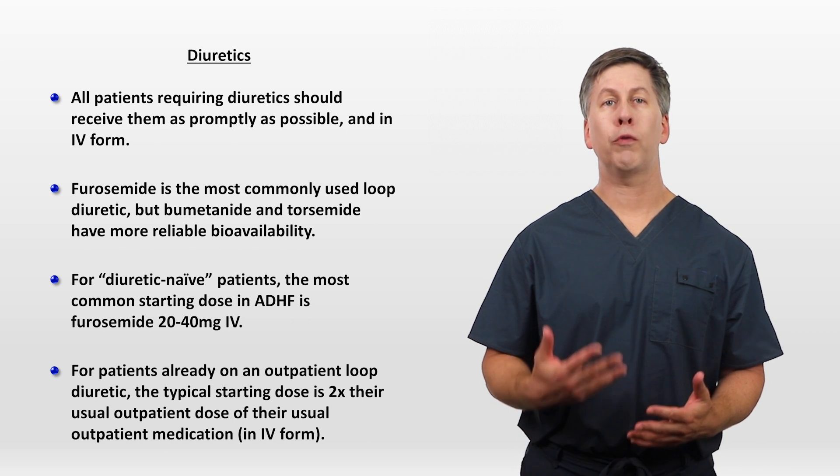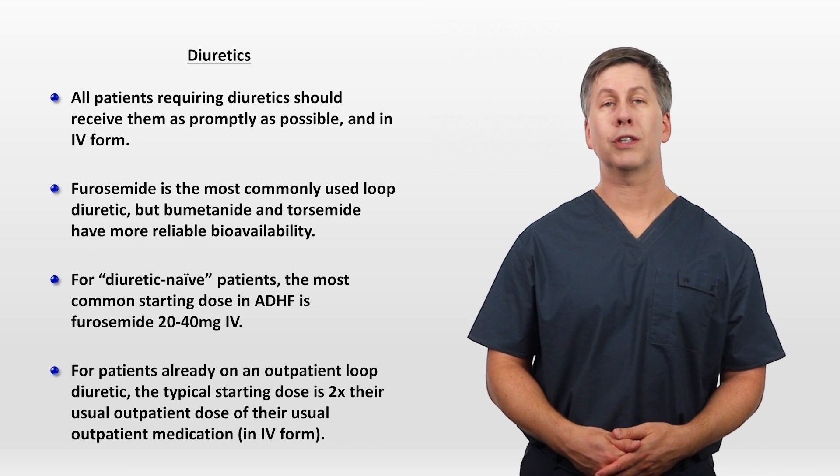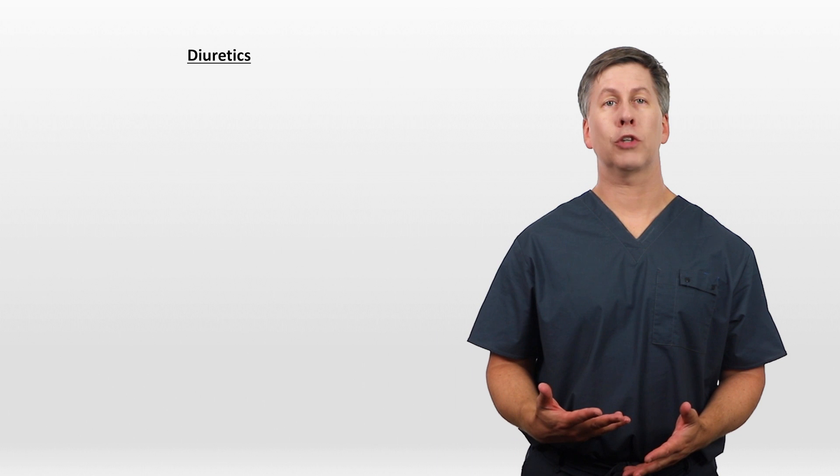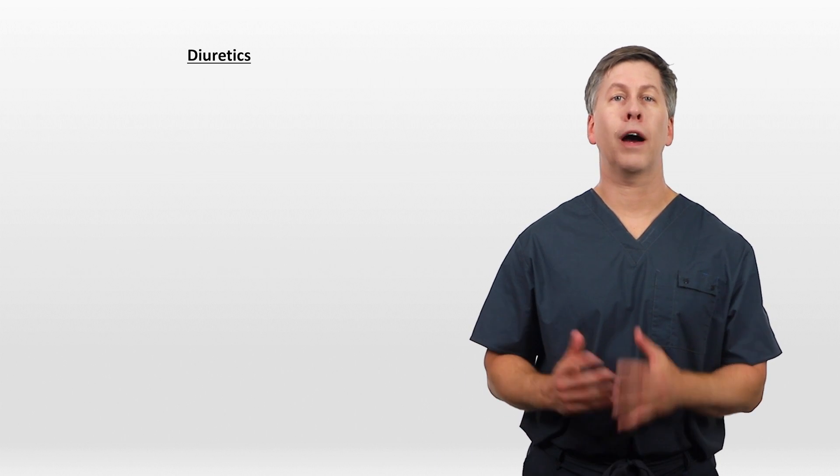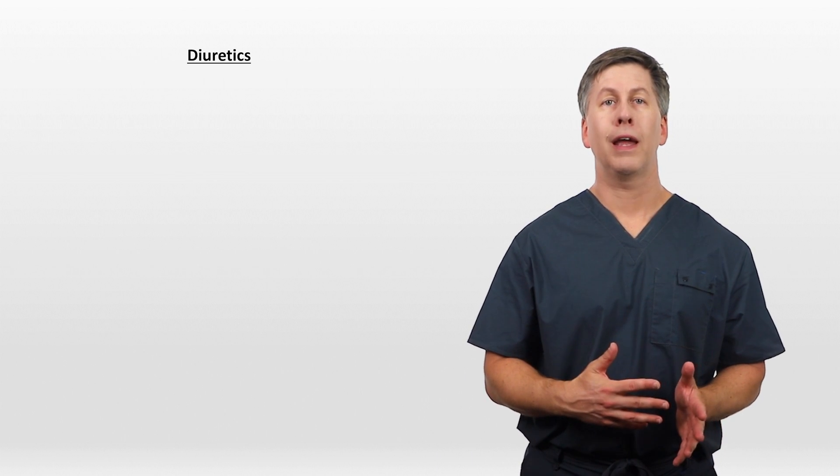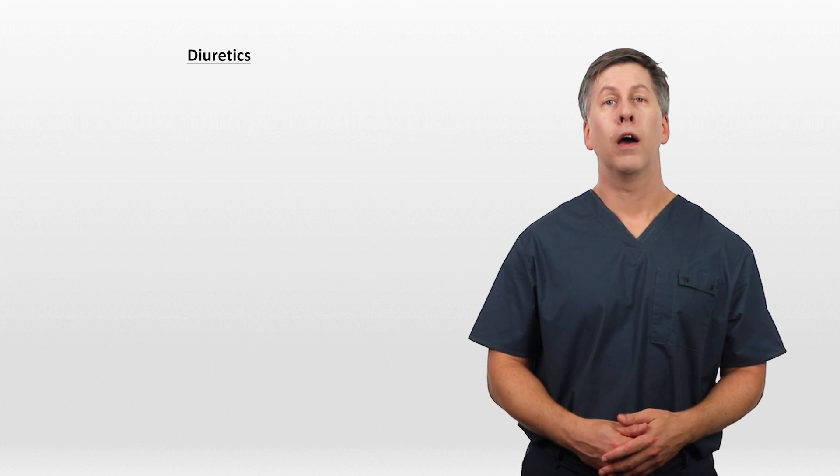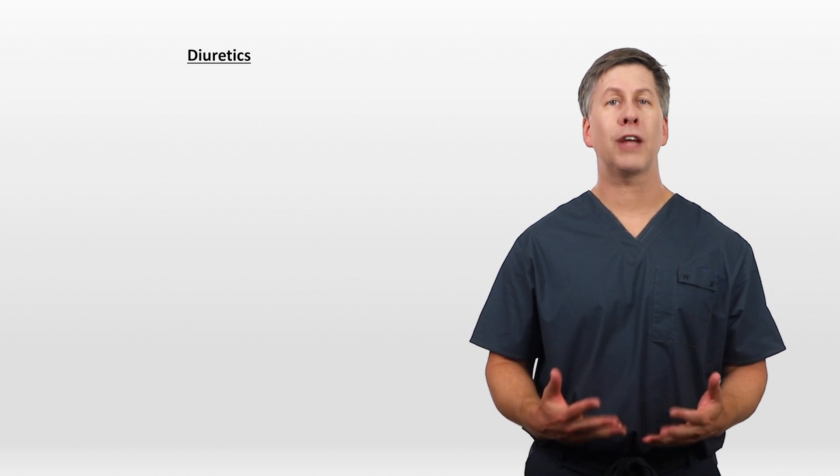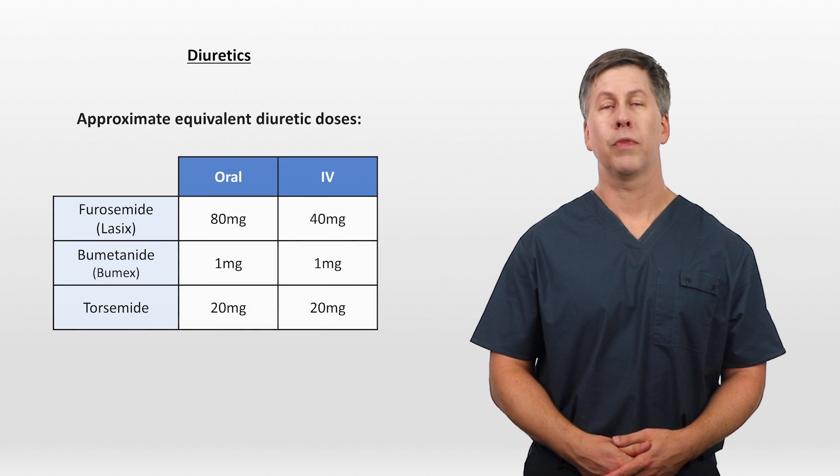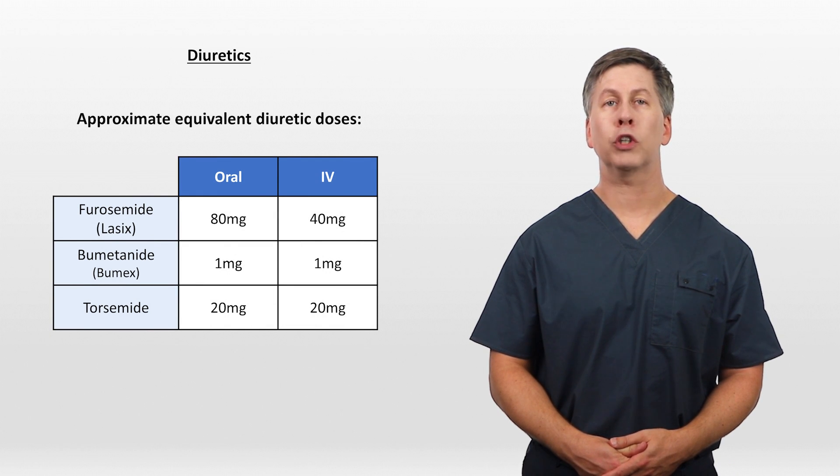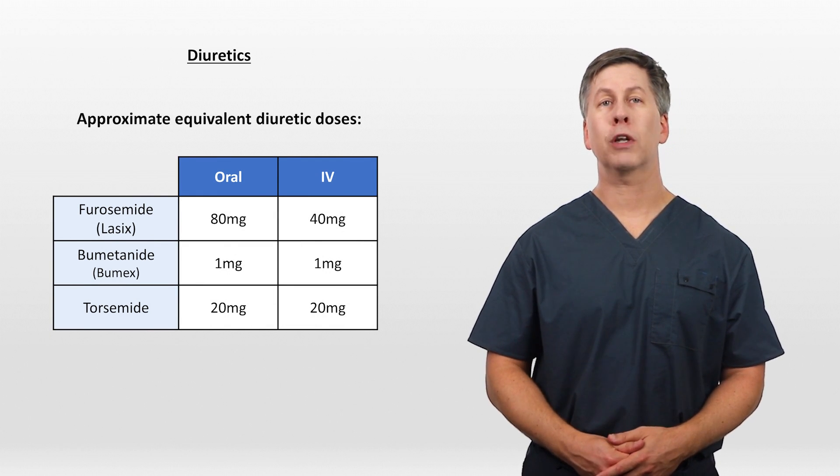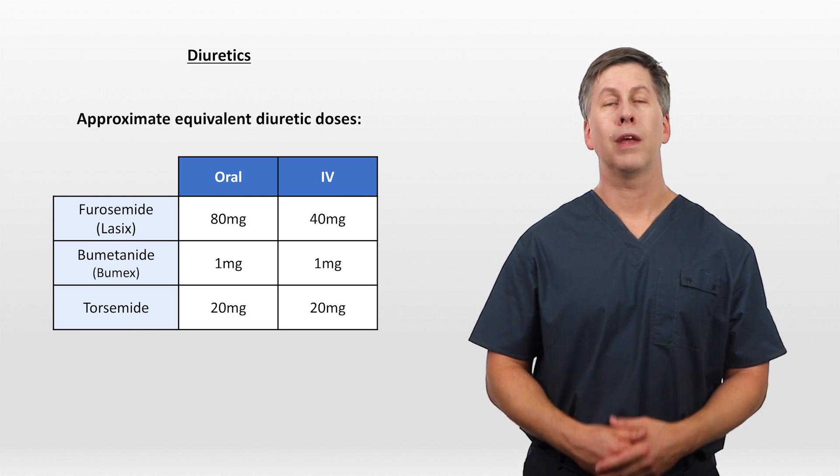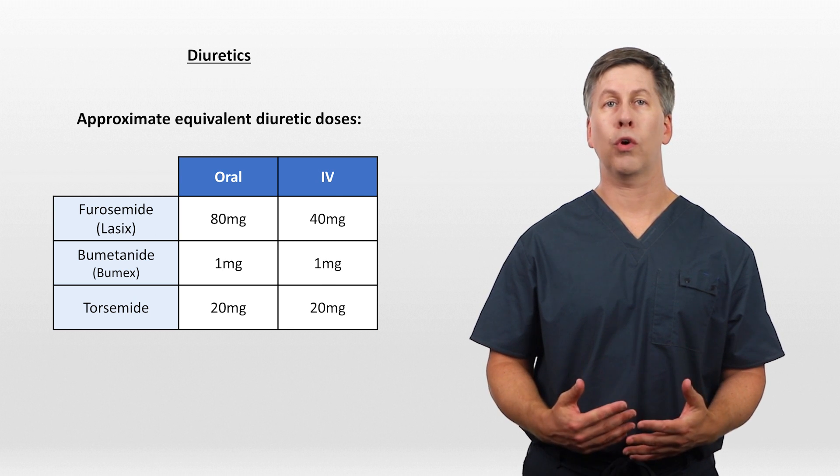If there is minimal or no response to the first dose given, usually the dose is then doubled and tried again. A frequent issue that comes up with dosing diuretics is how to convert between an IV form and an oral form, and how to convert from one diuretic to another. Unfortunately, different references are not in complete agreement with this, but this table here is the closest to a consensus. So 80 mg of oral furosemide is approximately equal to 40 mg of IV furosemide, 1 mg of Bumetanide either oral or IV, and 20 mg Torsemide, either oral or IV.